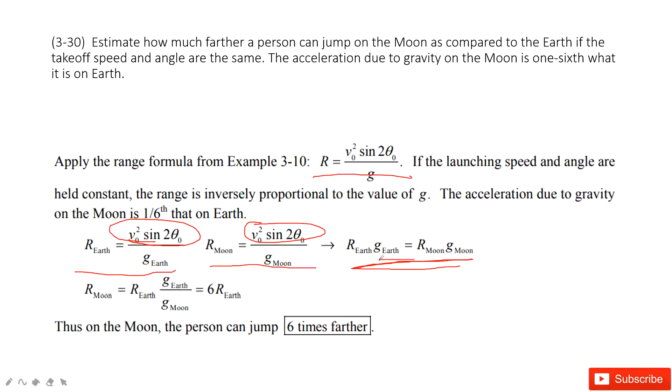And we know the acceleration due to gravity on the moon is one-sixth that on the earth. So we can then do the calculation for the displacement on the moon. So this is just on the moon, R on the moon, divided by g at this side. And g, the gravity on the earth divided by gravity on the moon, is six. So then it is six times farther. Thank you.